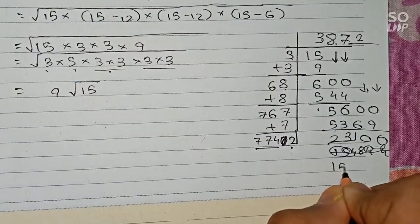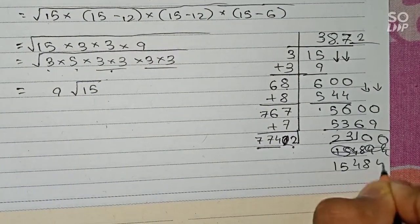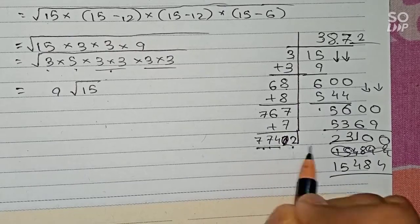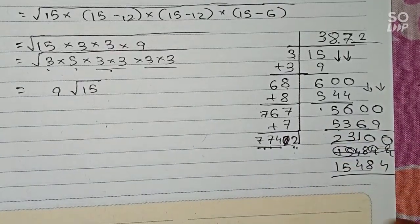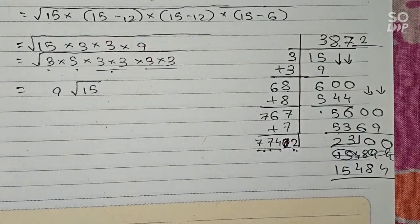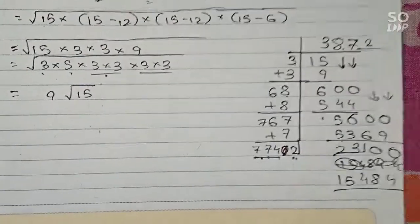It will become 15484. So 7742 multiplied by 2, that is 15484. So here only we end it, we are not finding the remainder anymore.